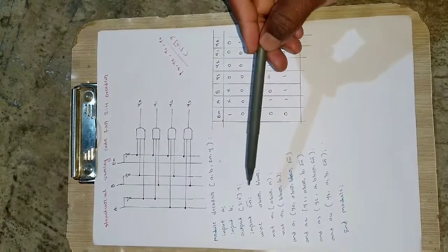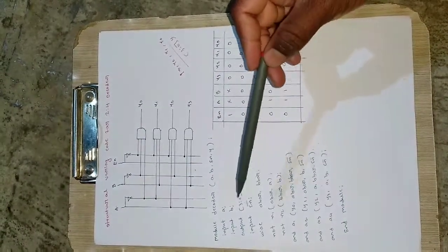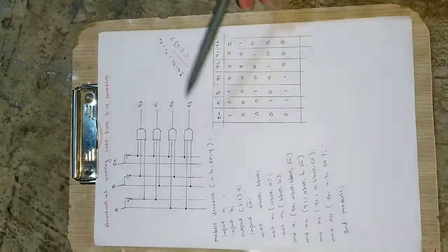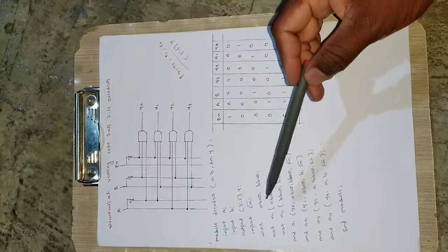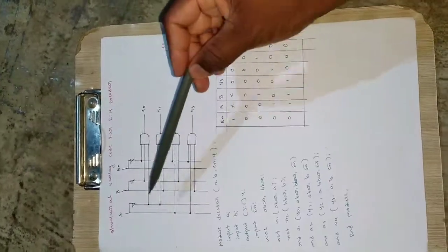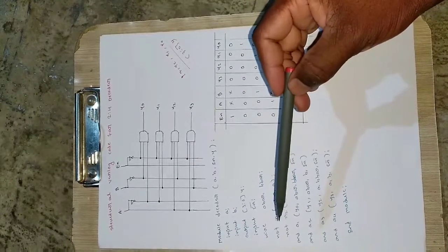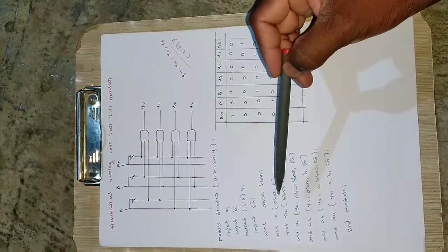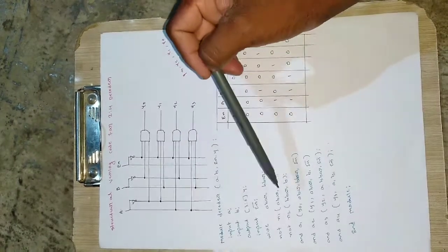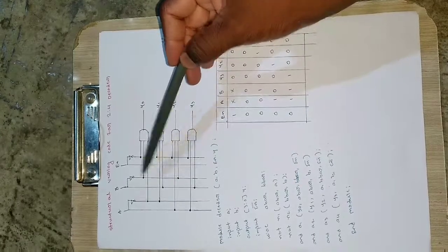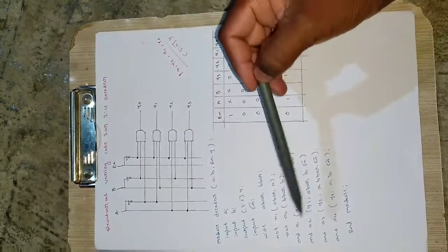I declare 'input enable_bar' — I assume enable_bar is already 0 (active low), so there's no need to invert it again. Then I declare wires A-bar and B-bar as temporary variables for the inverted signals. For the NOT gates: 'not n1(a_bar, a)' — output is A-bar, input is A. 'not n2(b_bar, b)' — output is B-bar, input is B. The format is: output first, then input.